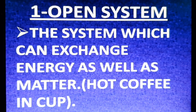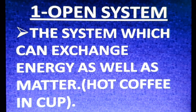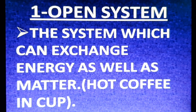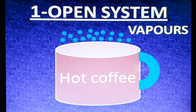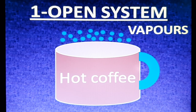This system allows both energy and matter to be exchanged between the surrounding and the system. For example, hot coffee or hot tea in a cup that is one side open, which forms an imaginary boundary, and the surrounding room and system can exchange energy.